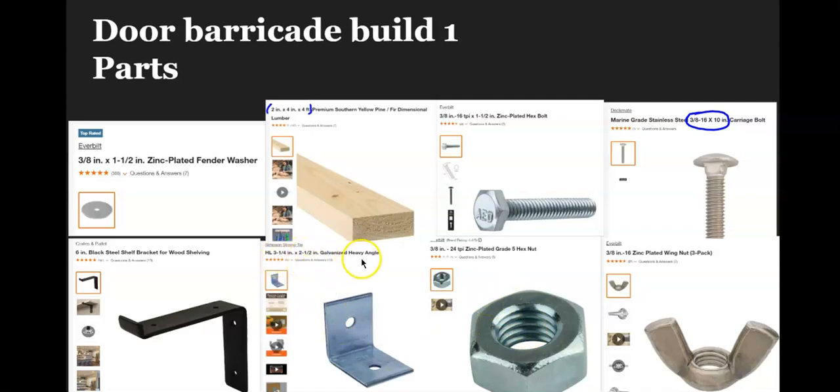This Simpson Strong-Tie—those are the specific details for the one you need right there. This one, I believe, is in the roofing section. And one of these six-inch black steel brackets. I did make one mistake in the video: you need a half-inch drill bit in order to drill through the hole on this bookshelf bracket and also to put a hole in this board. You could potentially use the three-eighths, but it's going to be a lot tighter. I'd recommend a half-inch drill bit.